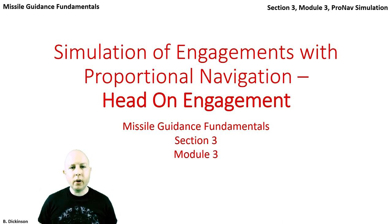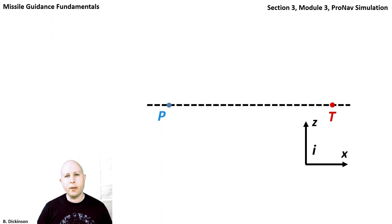We're now going to simulate a one-on-one head-on engagement using planar kinematics and proportional navigation. The pursuer and target are initially at the same altitude. The target has velocity VT headed straight for the pursuer. The pursuer has velocity VP, but a heading error, so the pursuer needs to make a course correction for collision.